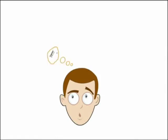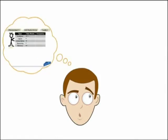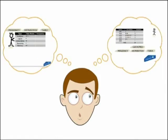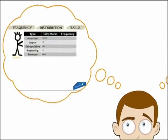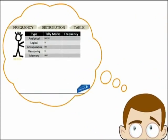We already know the definition of data, its organization, and the use of tally marks in the presentation of raw data. The simplest way to organize raw data is in the form of a frequency distribution table using tally marks.